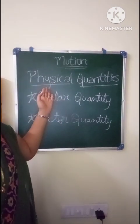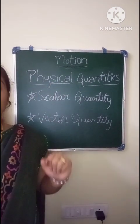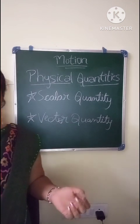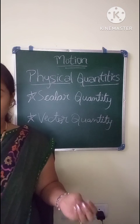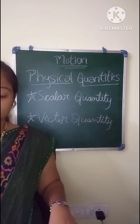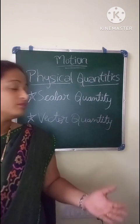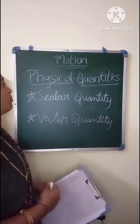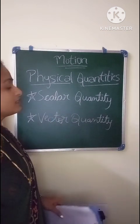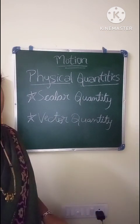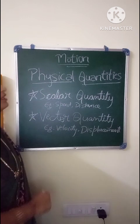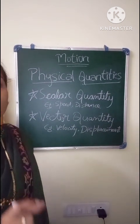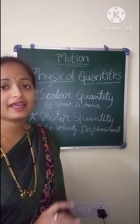The next topic is physical quantities. What are physical quantities? A physical quantity is anything that can be measured. There are two types of physical quantities: scalar quantity and vector quantity. Scalar quantities are physical quantities which can be measured but have only magnitude and not direction.